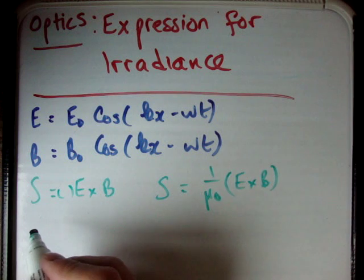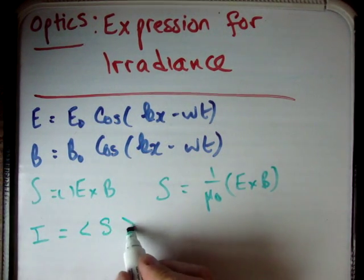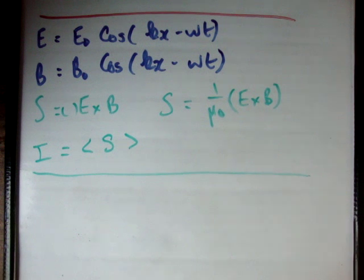So the next thing we need to do is define the fact that the irradiance is equal to the average of the Poynting vector. That's just the definition. The irradiance is the average of the Poynting vector. So what we need to do now is calculate the irradiance.